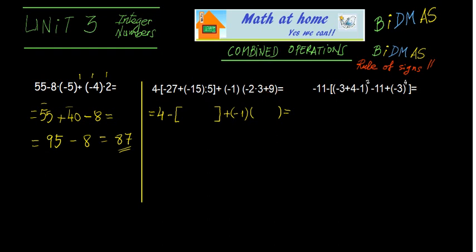So inside the rounded bracket it is minus six plus nine. In the other bracket we have negative 27. And now there is a division: minus 15 divided by 5, which is negative...